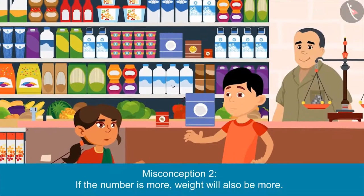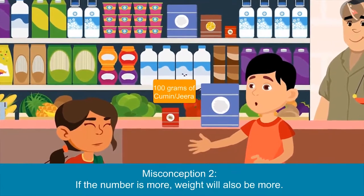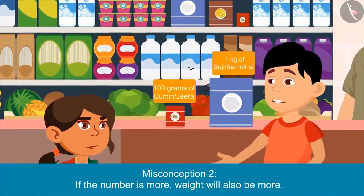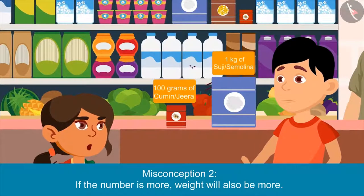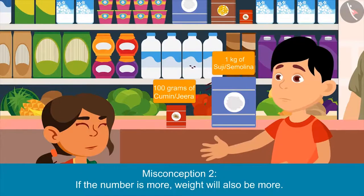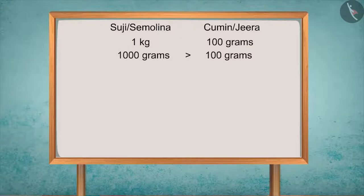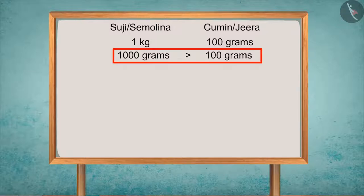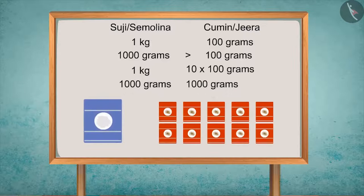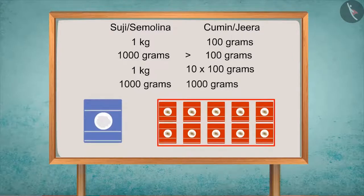Brother, you had just picked a packet of 100 grams of jeera, and I picked a packet of 1 kg of sooji. Which of these two packets was heavier? Your packet of sooji. Why? Because the packet of sooji is of 1 kg, and 1 kg is equal to 1000 grams. So 1000 grams of sooji is heavier than 100 grams of jeera. And if we put 10 packets of 100 grams together, their total weight would be 1000 grams, which would be equal to 1 kg of sooji.